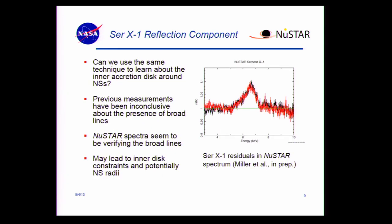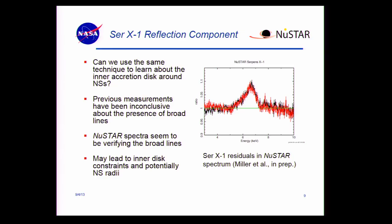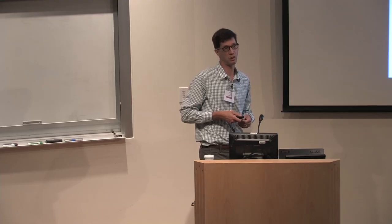The neutron star connection I want to make is that we're also doing reflection components in neutron stars. For neutron stars, there have been iron lines seen in many systems, but it's been really unclear whether the iron line is a broad line or multiple lines. NuSTAR really seems to be showing us that, at least in Cir X-1, we're seeing a broad emission line. Residuals when we fit above and below the iron line region show a strong broad residual — this is preliminary work by John Miller, but a paper should be out fairly soon. If we can do this, we get good constraints on the inner disk properties, which is very close to the neutron star radius, giving an upper limit on the neutron star radius.